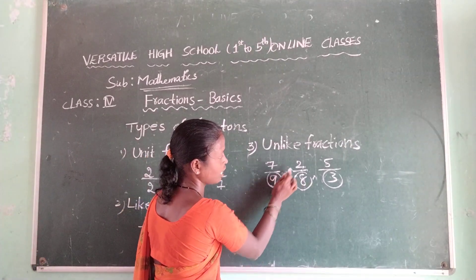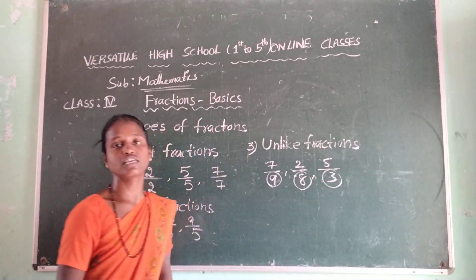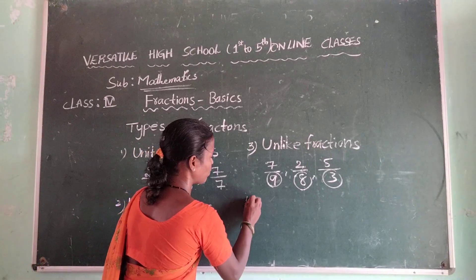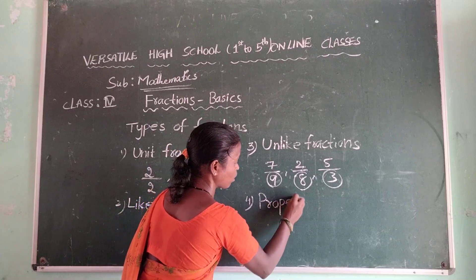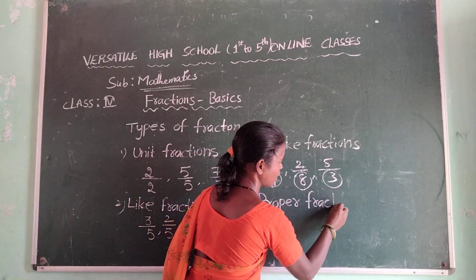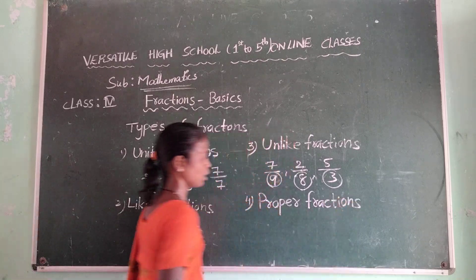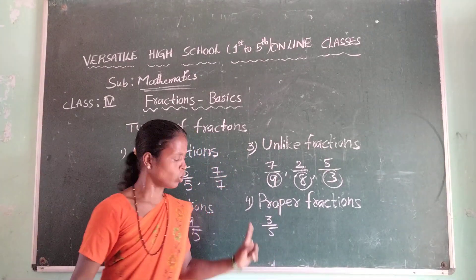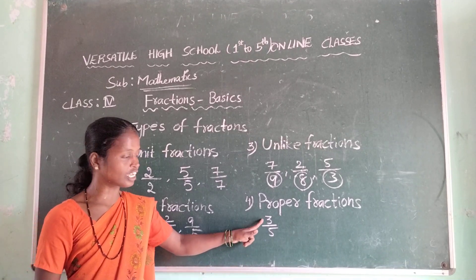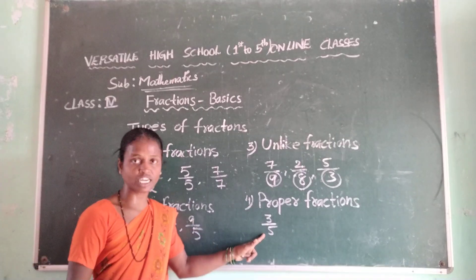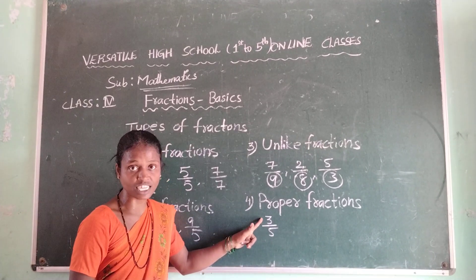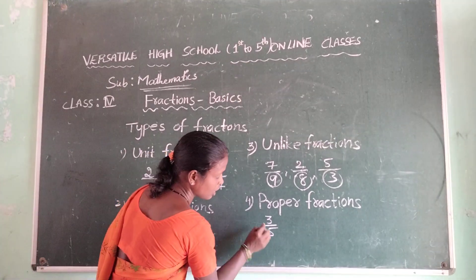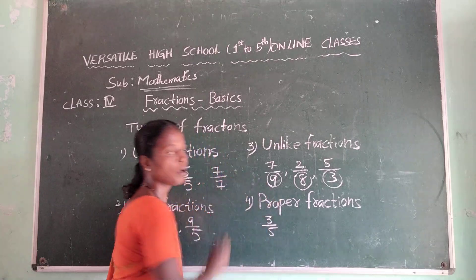Unlike fractions: seven by nine, two by eight, five by three — these are the unlike fractions. Now we are discussing about proper fractions. Proper fraction means — for example, three by five. What is the numerator? Three. And denominator? Five. Observe that the numerator is less than the denominator. This type of fractions are called proper fractions.